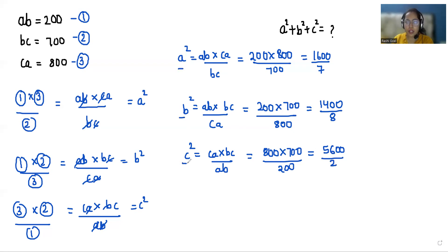Now we have the value of a², b², and c² so we have to find the sum of these three. So a² plus b² plus c² equals 1600 by 7 plus 1400 by 8 plus 5600 by 2. If you take the LCM you get the LCM as 56.